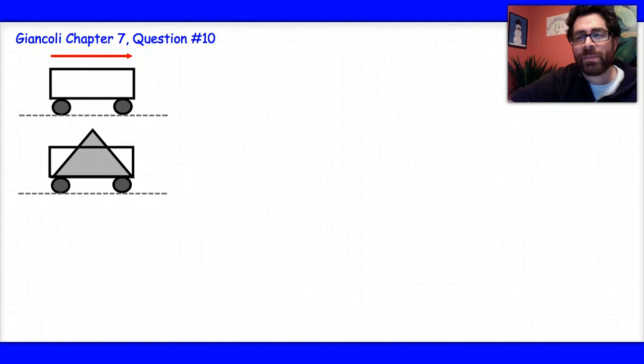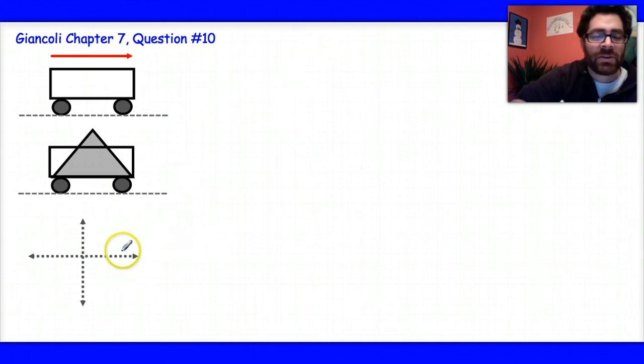Basically, the reason I chose that, to be honest with you, is because the sign conventions are easiest. So if I draw my coordinate system on here and remind myself that anything to the right has a positive velocity, anything to the left has a negative velocity, therefore my momentum vector is going to be positive in both cases.